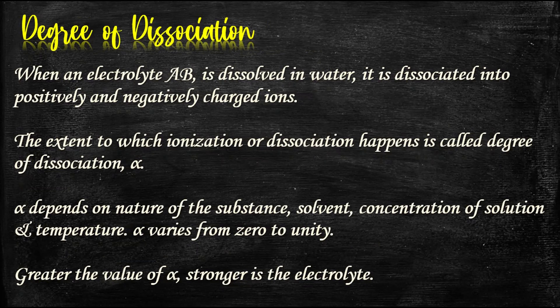Degree of Dissociation: When an electrolyte AB is dissolved in water, it dissociates into positively and negatively charged ions. The extent to which ionization or dissociation happens is called the degree of dissociation, or alpha. Alpha depends on the nature of the substance, the solvent, the concentration of solution, and temperature. Alpha varies from zero to unity; the greater the value of alpha, the stronger the electrolyte.